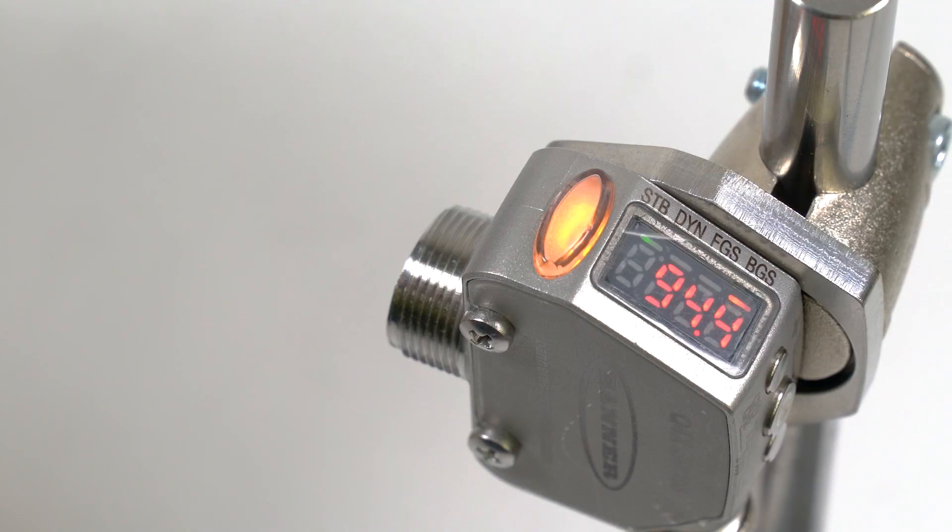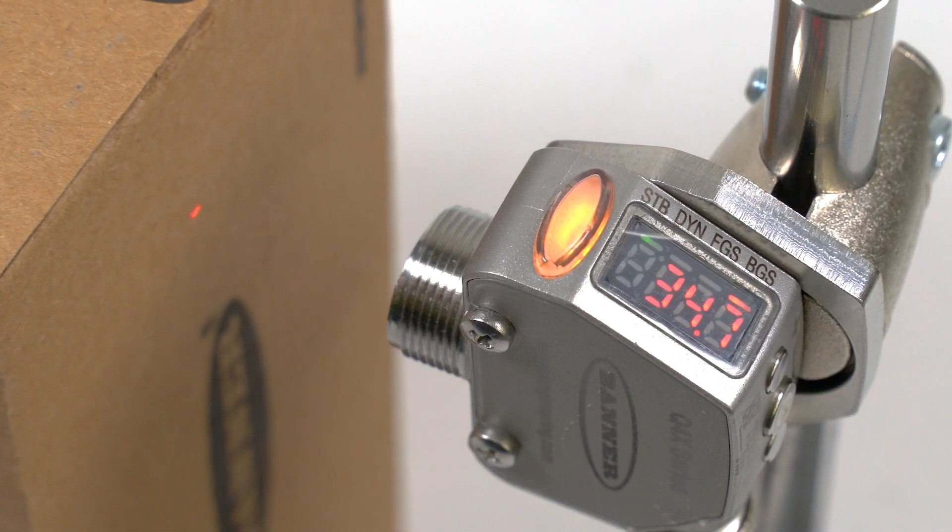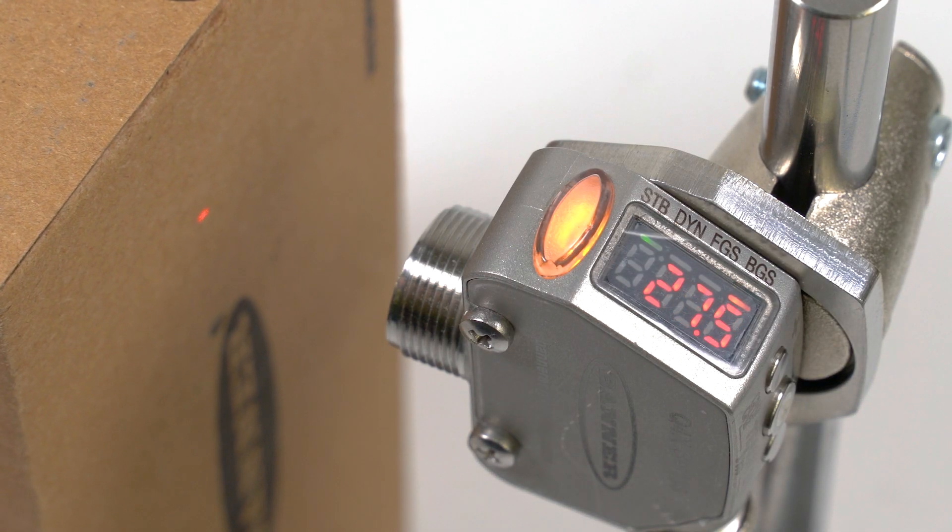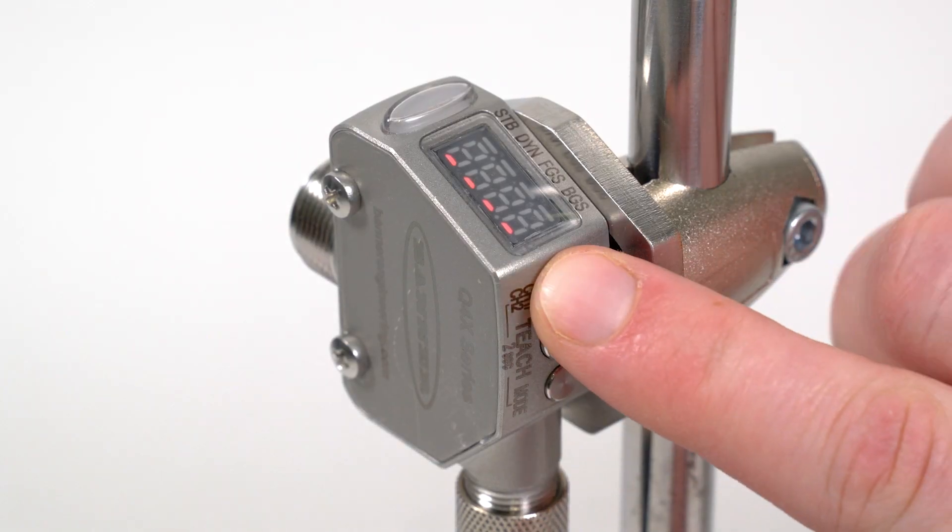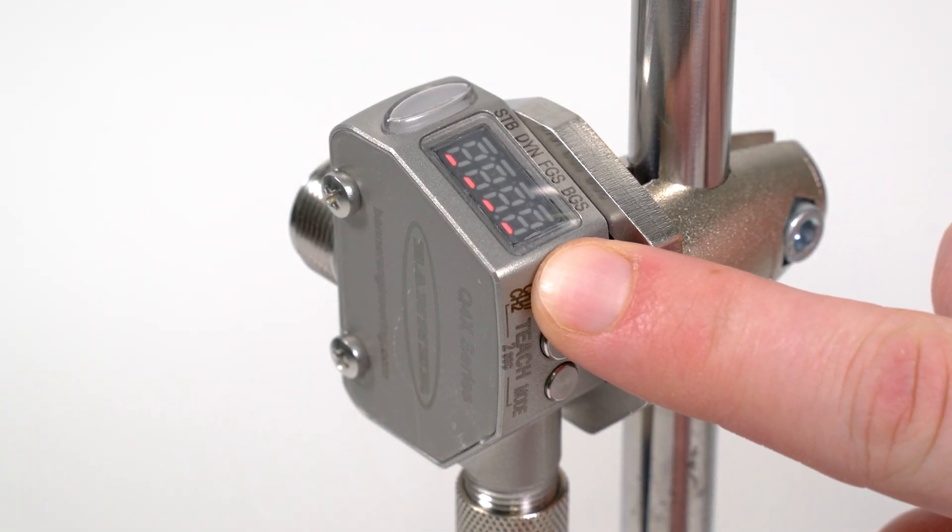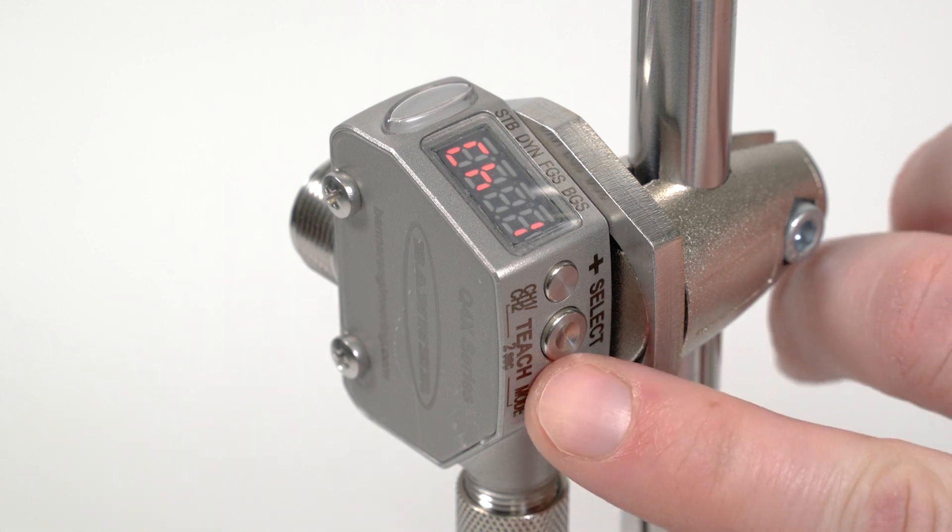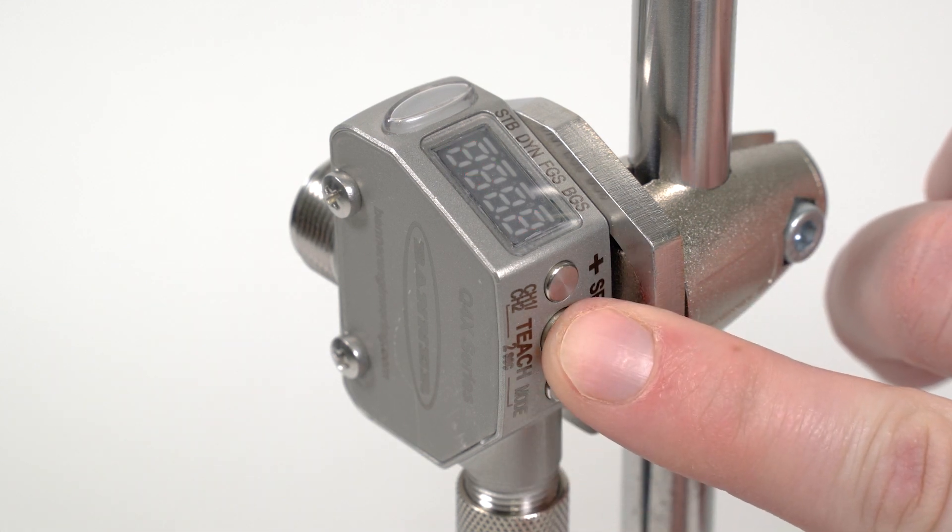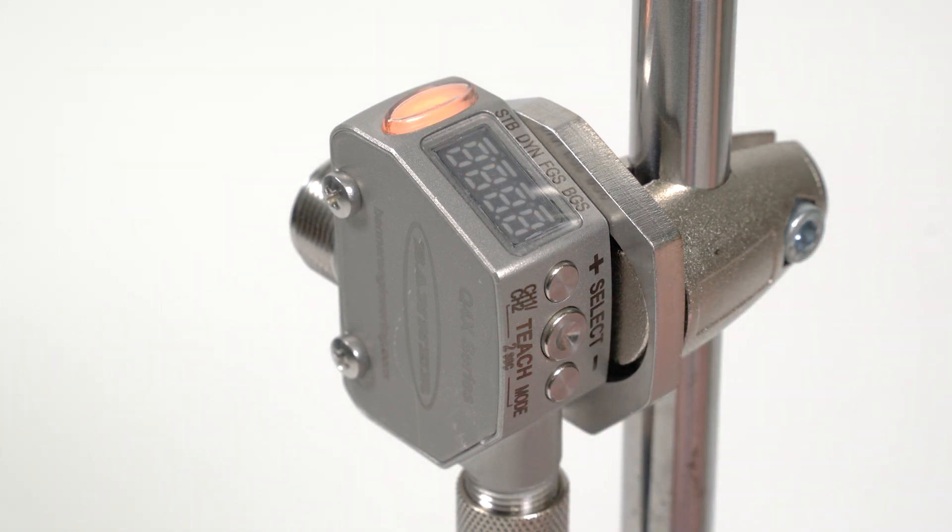The next step is to set the Q4X to provide a PFM signal to its channel 2 output. Press and hold the plus or channel select button for two seconds. Press either the plus or minus button until the display shows channel 2 and press the select button. The display will flash to confirm the channel selection and return to run mode.